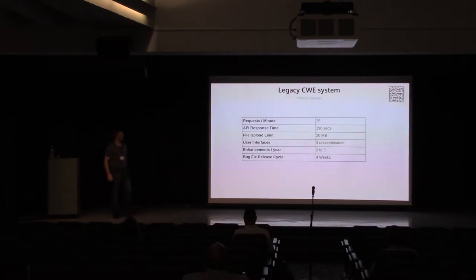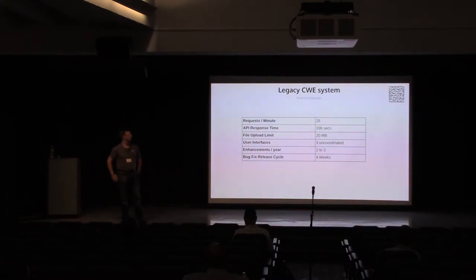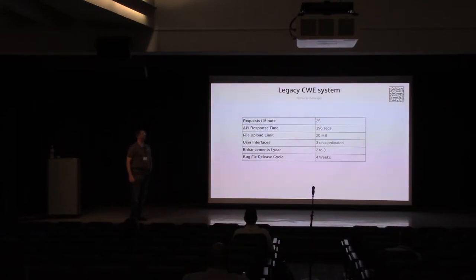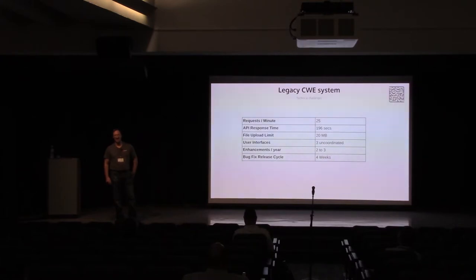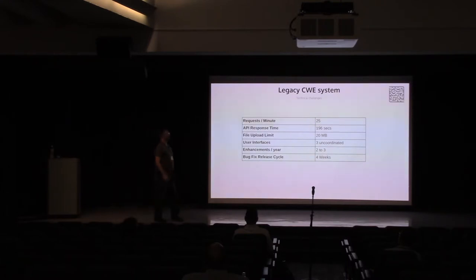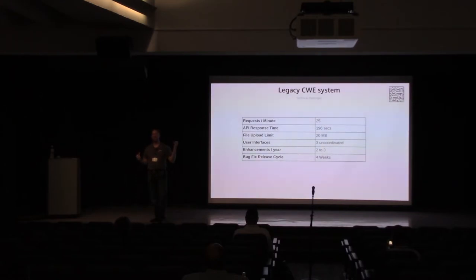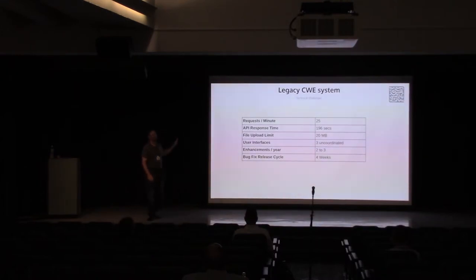The numbers we're talking about: the requests it could handle per minute — 25. The response time of the API — over three minutes. Nobody's sitting in front of a browser waiting three minutes, but still, it's bad. The good news is this is a good target for modernization. On scalability alone you can say we can do a lot better here.